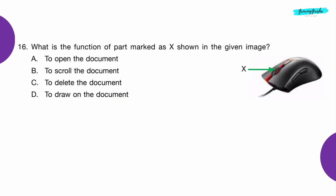Question 16: What is the function of the part marked as X shown in the given image? Option B — X is a cursor and it is used to scroll the document.